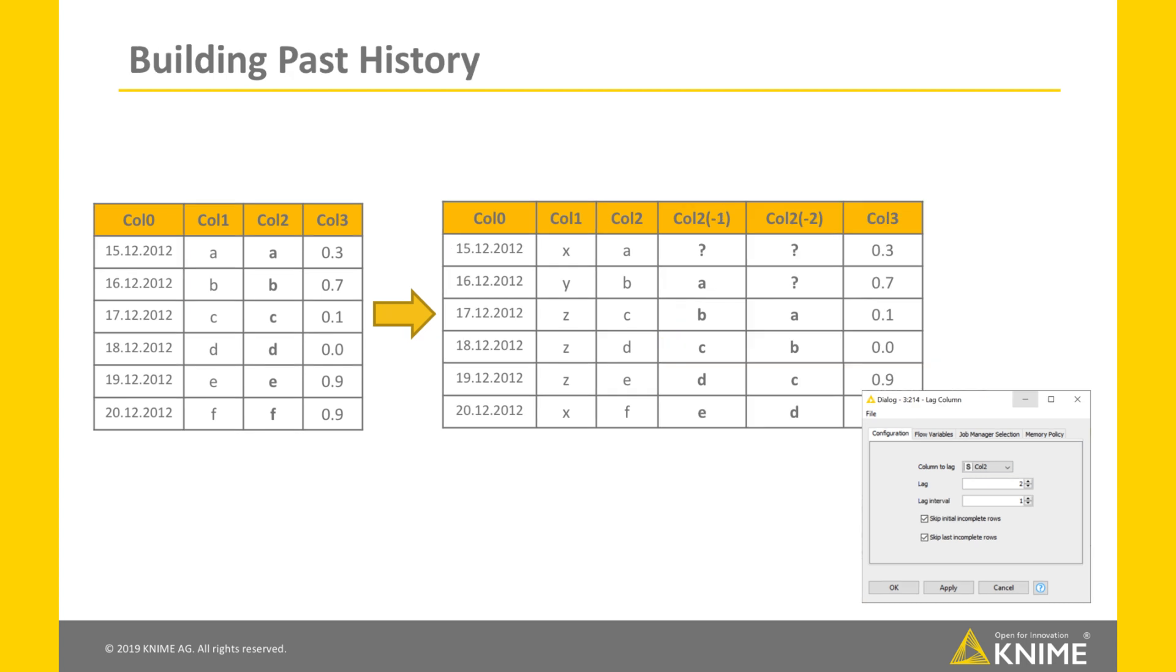If we set Lag to 2, then data cells in Column Col2 move two steps from the past into the future, and a vector is built with the data cells from the intermediate steps. That is, a data vector is built with the past values from time t-2 till current time t.